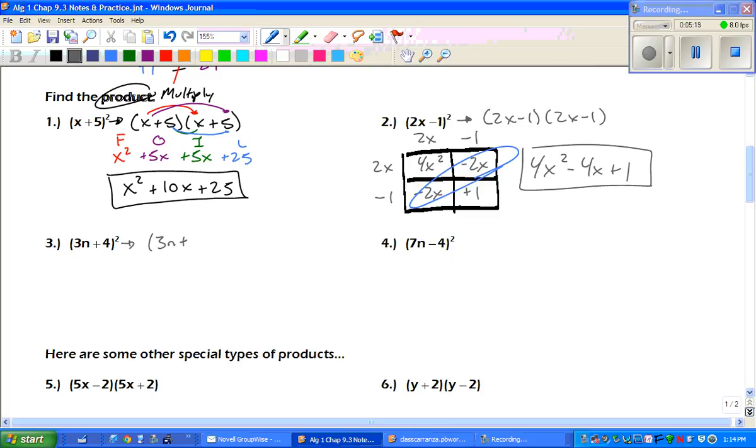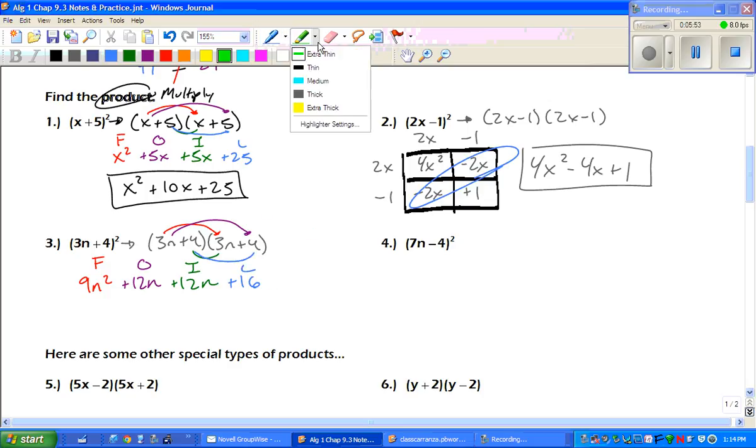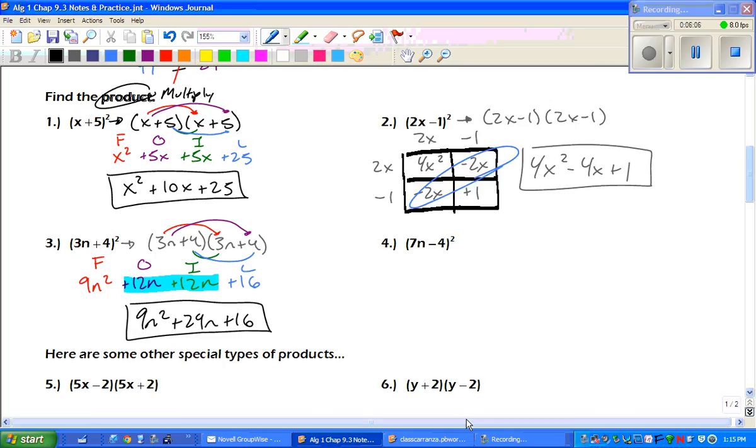Remember that this is 3n plus 4 times 3n plus 4. 9n squared, 9n squared. 3 times 4 gives us 12n. The inside, which is 12n. And then the last, 4 times 4 is 16. Combine those like terms. Final answer. 9n squared plus 24n plus 16.